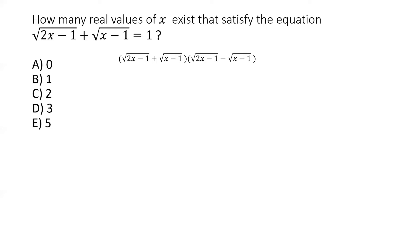If you have the sum of two square roots and multiply by the conjugate — the difference — you get √a + √b multiplied by √a − √b, which applies the difference of squares formula: a² − b². So here, a = √(2x−1) and b = √(x−1), giving us (2x−1) − (x−1). This is simple algebra.